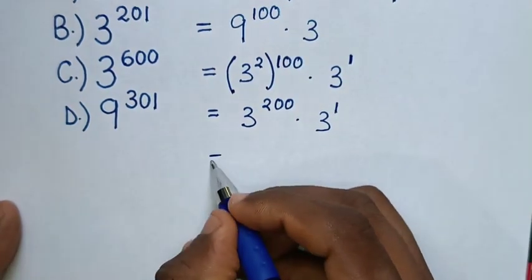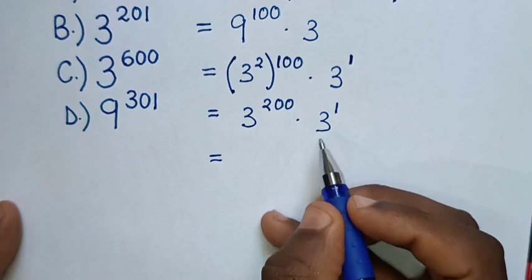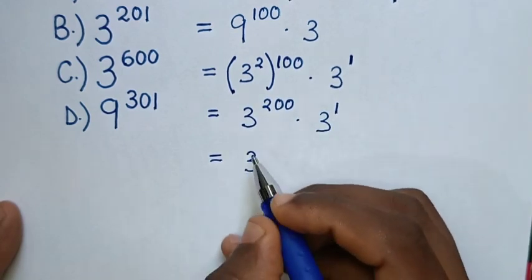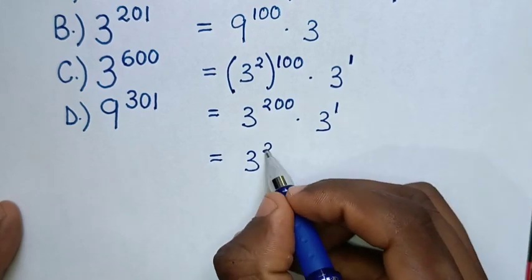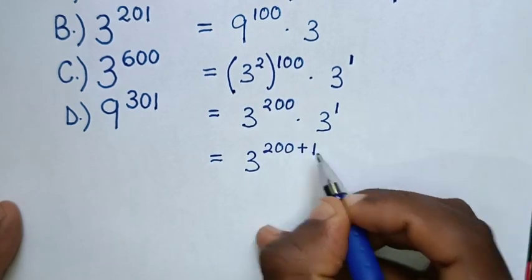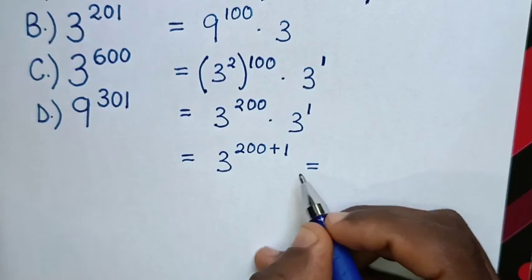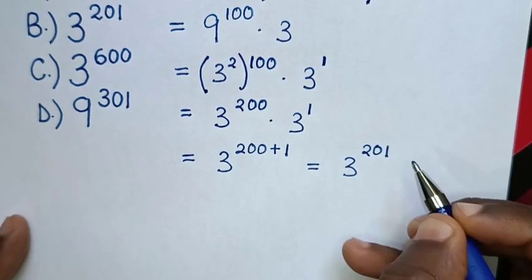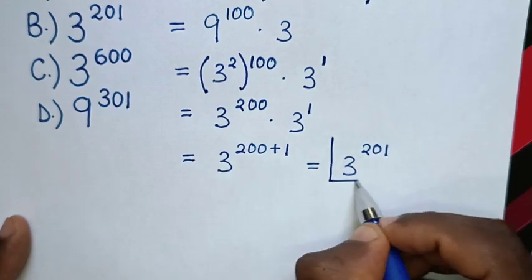Then it will be equal to, in here's multiplication of exponents with same base with different powers. So it will be base of 3 power of 200 plus 1. Then it will be equal to 3 power of 200 plus 1 is power of 201. So this is our final answer.